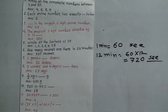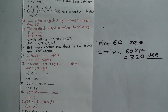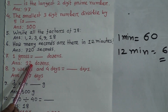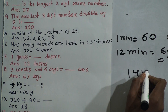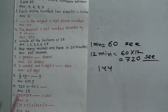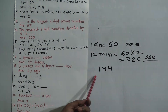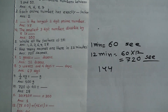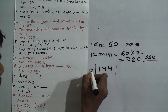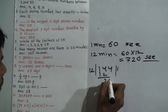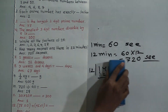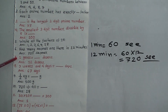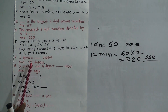Question 7: 1 gross equals how many dozens? We know 1 gross equals 144 things. We also know 12 things make 1 dozen. So we divide 144 by 12, which gives 12. Therefore, 1 gross equals 12 dozens.